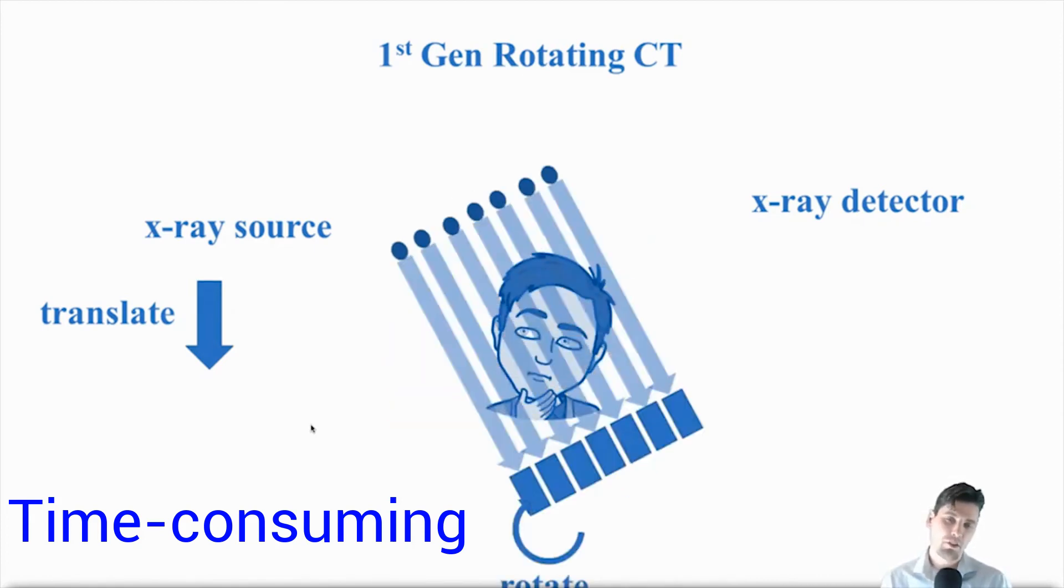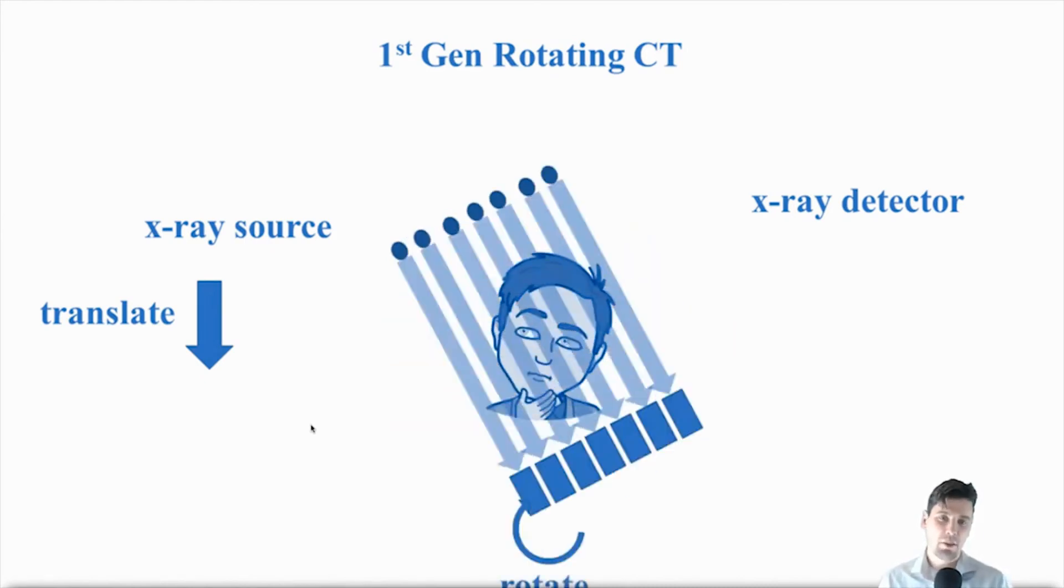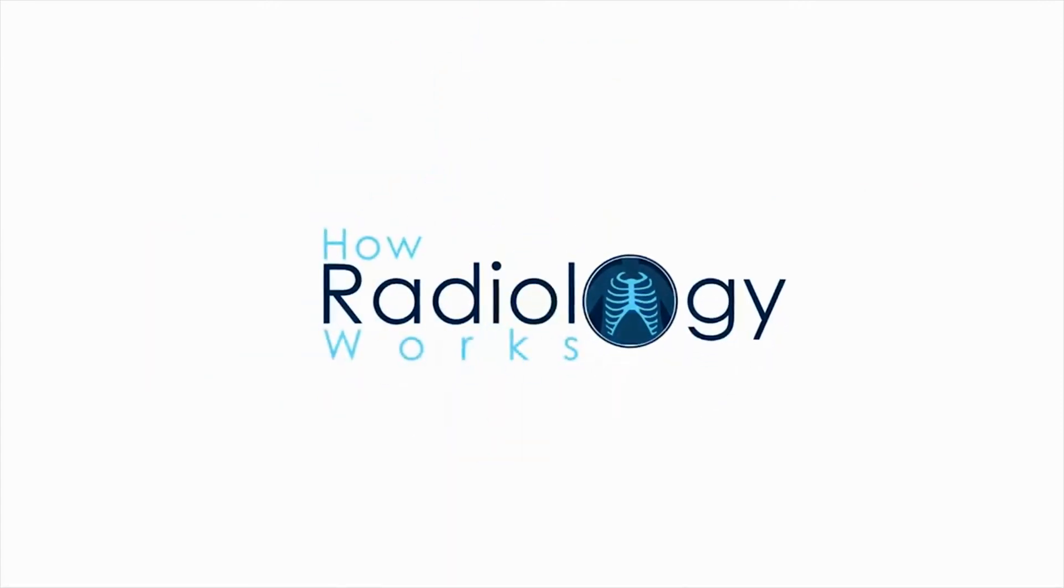You can see why, because you only need one x-ray source and one detector so it's the easiest way to first build up a system. Again, this has been Brian Nett for howradiologyworks.com. Thanks!